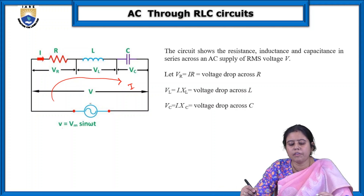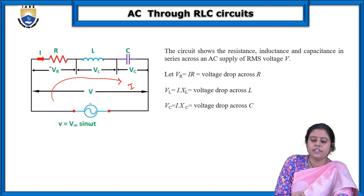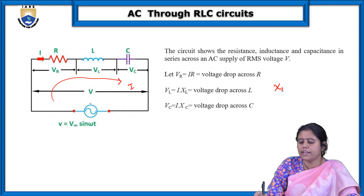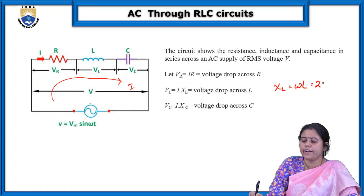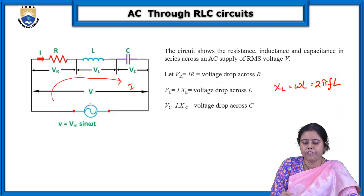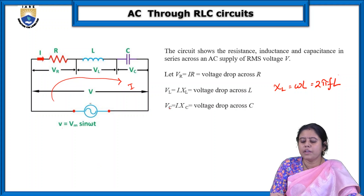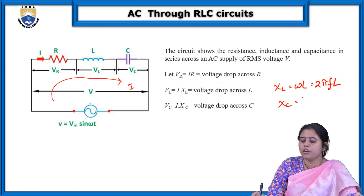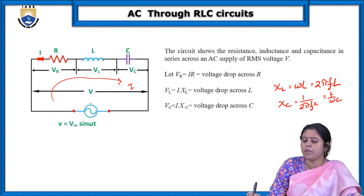V equals Vm sin(ωt) and its RMS value is capital V. As this is a series circuit, the same current I flows throughout. The voltage drop across the resistance is Vr = IR. The voltage drop across the inductor is VL = IXL, where XL = ωL = 2πFL. L is the inductance in Henry and F is the supply frequency — 50 Hz for India. Similarly, the voltage drop across the capacitor is VC = IXC, where XC = 1/(2πFC) = 1/(ωC), and C is the capacitance in Farads.